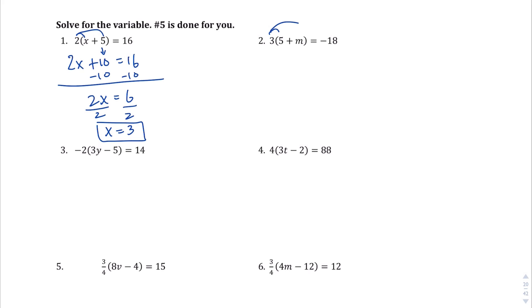Question number two. Distributive property or the same. 3 times 5 is 15. 15 plus 3M, because 3 times M is 3M. Equals negative 18. Let's get rid of the 15 first because it's all hanging out by itself over there. So I'm going to subtract 15 to make 0. This goes away. I'm left with 3M. This equals negative 30. I'm going to divide both sides by 3. And I'm left with M equals negative 10.